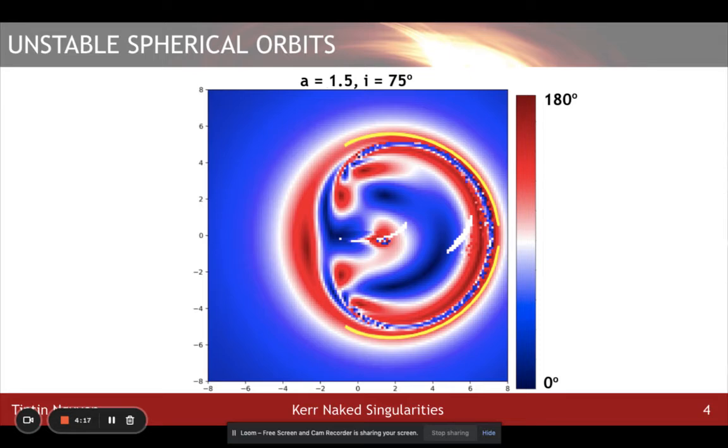However, from this deflection angle visualization, it seems like prograde orbits have a circular region that deflects directly back as well. These prograde orbits can still rotate around the naked singularities multiple times, despite not rotating an infinite number of times like the regular spherical photon orbit.